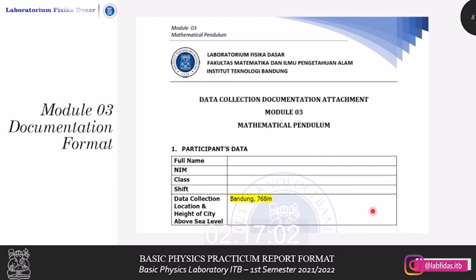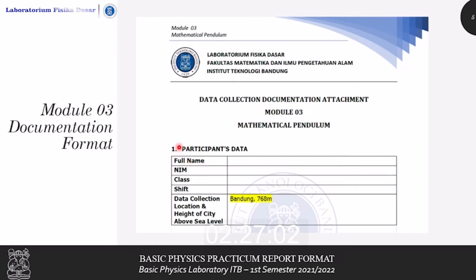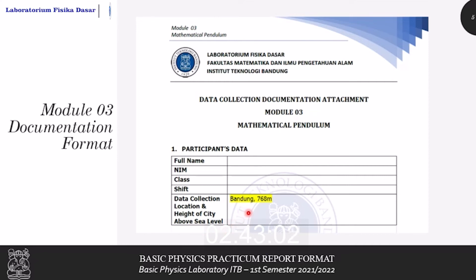Now, special for Module 3, along with your practicum report, you need to attach the data collection documentation. This file includes the participant's data: your full name, class, shift, and also the location of the data collection and the height of the city above sea level. For example, the data is collected in the city of Bandung at a height of 768 meters above sea level.